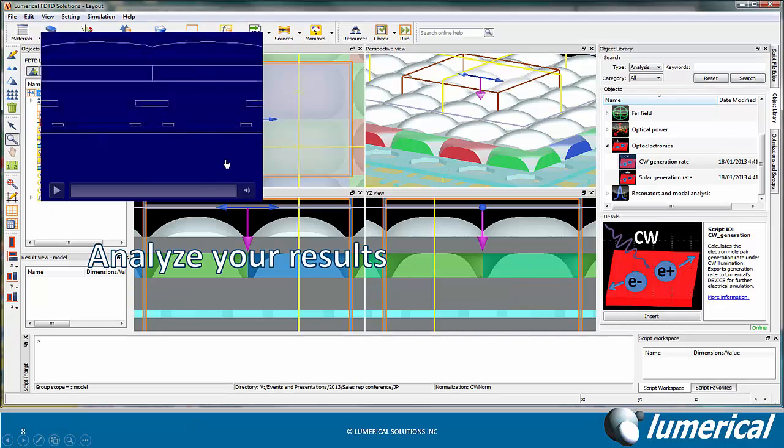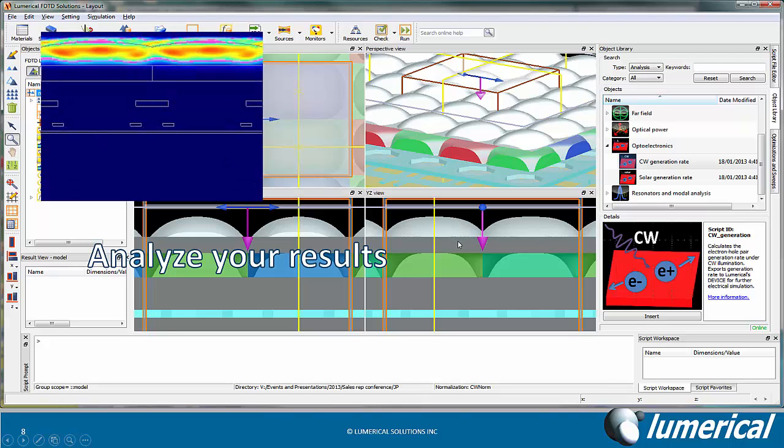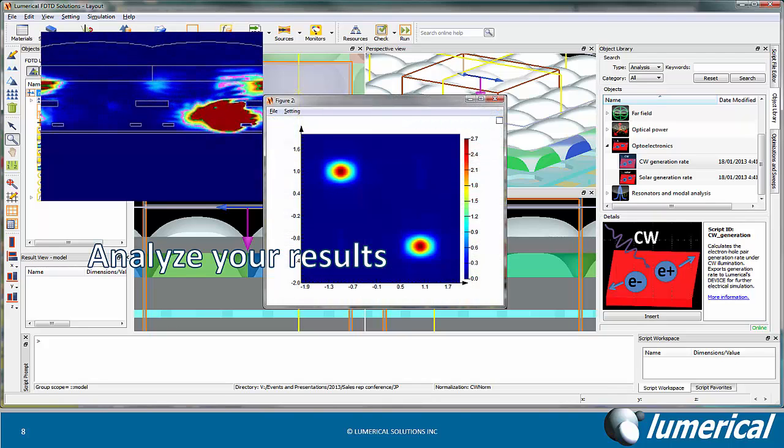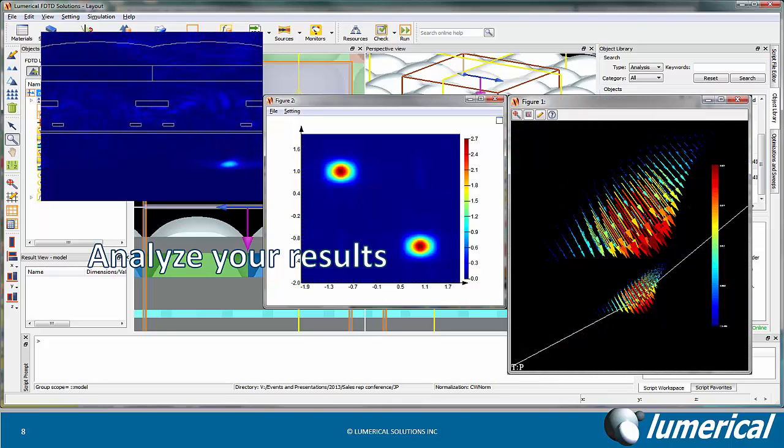Once the simulation is run, we can look at the time domain response of a plane wave arriving at the pixel. We can also look at frequency domain results, such as the field profile at any wavelength, or the Poynting vector at the surface of the silicon.